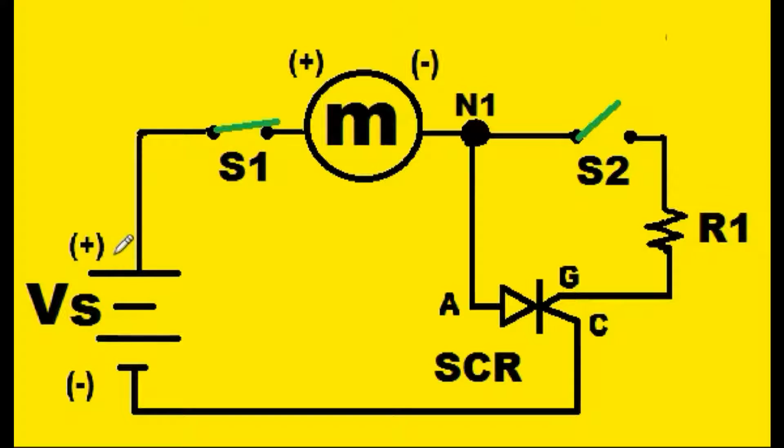So holes come out of the positive side on the voltage source. They cross over S1, that is switch one. They enter into the motor, exit the motor, and arrive at N1. N1 is node one. They rush forward towards S2, but oh my goodness, the bridge is up. The switch is up.